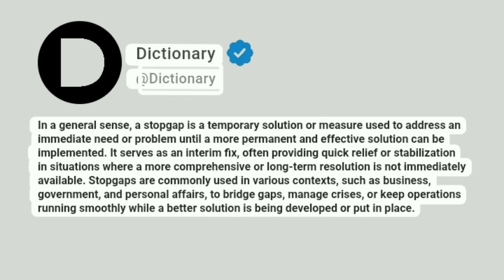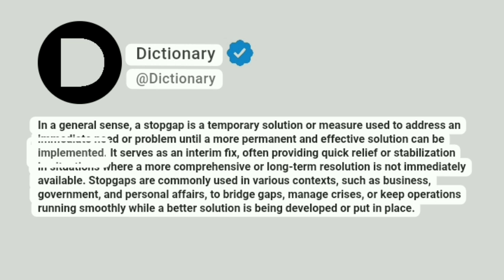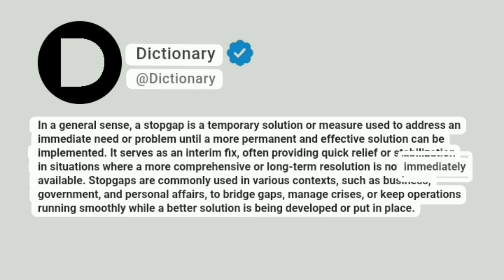Dictionary. At Dictionary. In a general sense, a stopgap is a temporary solution or measure used to address an immediate need or problem until a more permanent and effective solution can be implemented. It serves as an interim fix, often providing quick relief or stabilization in situations where a more comprehensive or long-term resolution is not immediately available.